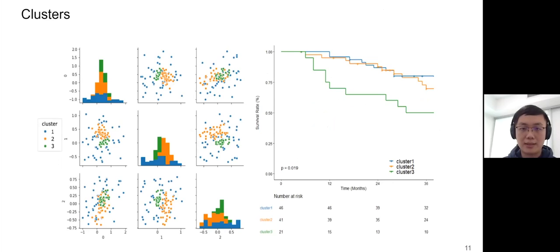These are the three clusters we identified. The figure on the left is a pair plot where both the x-axis and y-axis represent the three-dimensional latent space. The color indicates the clusters, and each dot is a patient. We can see that these points form three normal distributions, each representing an imaging subtype. There are 46, 41, and 21 patients in each subtype, respectively. There is a significant difference in the three-year survival rate between subtype 3 and the other two subtypes.